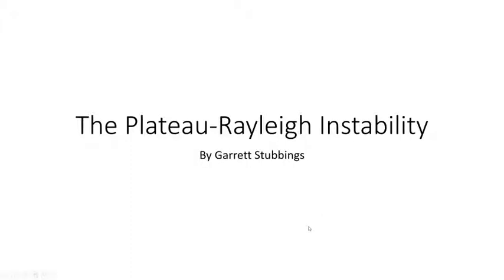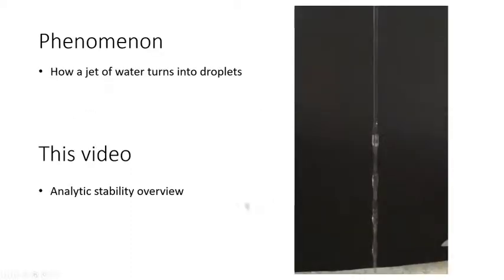The Plateau Rayleigh Instability by Garrett Stubbings. So what is the Plateau Rayleigh Instability? It is how a cylindrical jet of water basically becomes unstable at a point and turns into these discrete spherical drops.